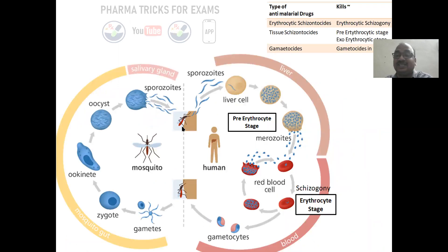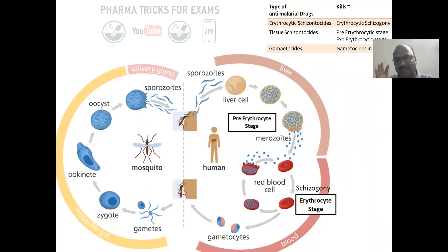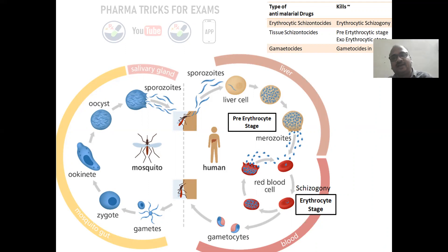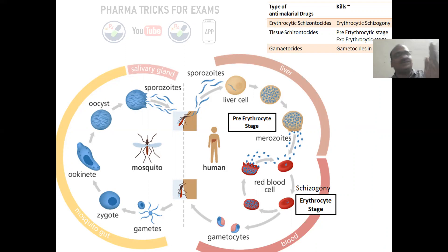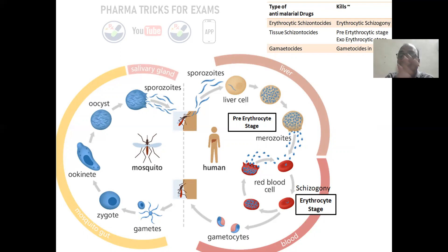If you see the malarial parasite life cycle, it is very different. The malarial parasite life cycle requires the human being as well as the mosquito. 50% of the malarial parasite life cycle is in the human, and 50% is in the mosquito. Only if you combine both together do you get one complete life cycle. This is very important and appears in many examinations.